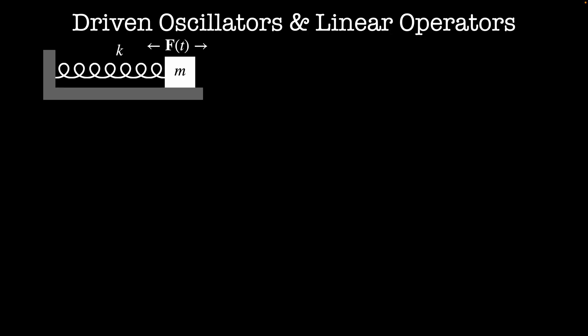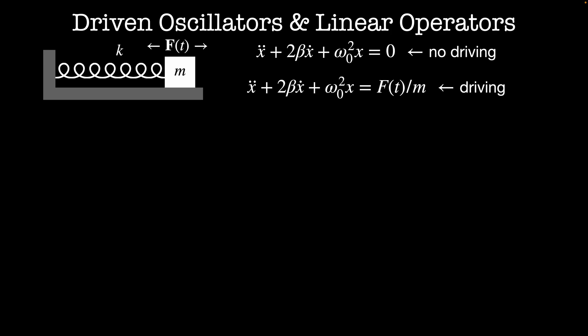Hello, and welcome to Classical Mechanics 2. In this video, we'll explore driven oscillators, linear operators, and Fourier series solutions. We'll start with the regular damped oscillator that we worked out in the last video, and see what happens when there's a force accelerating the mass according to some function of time. So our equation of motion is now x double dot plus 2 beta x dot plus omega naught squared x is equal to the force as a function of time divided by m.